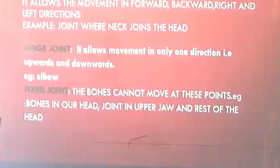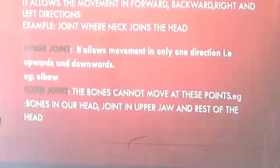Another kind of joint is the fixed joint. The bones cannot move at these points. Bones in our head, the joint in the upper jaw and the rest of the head — all these are examples of a fixed joint.